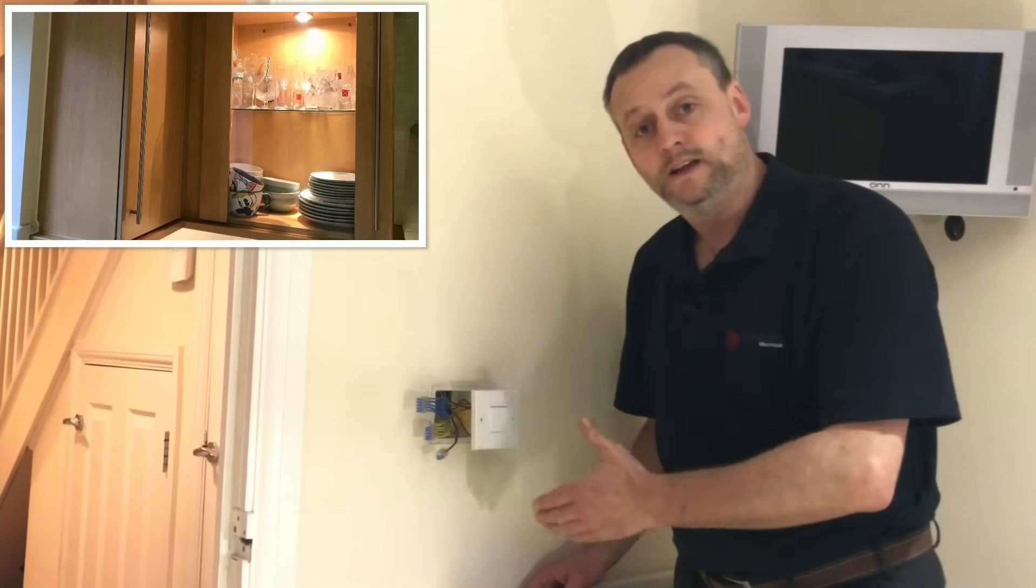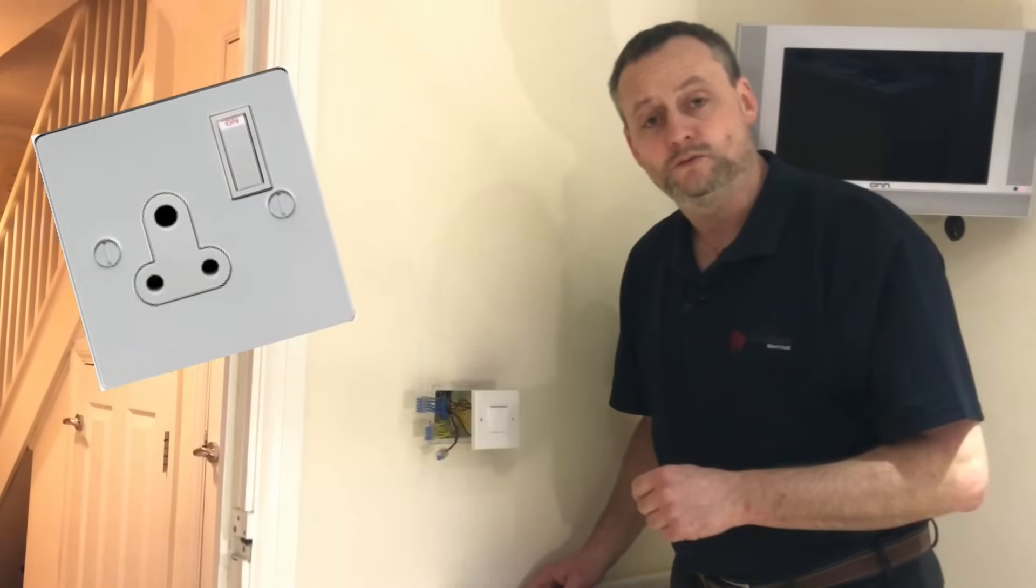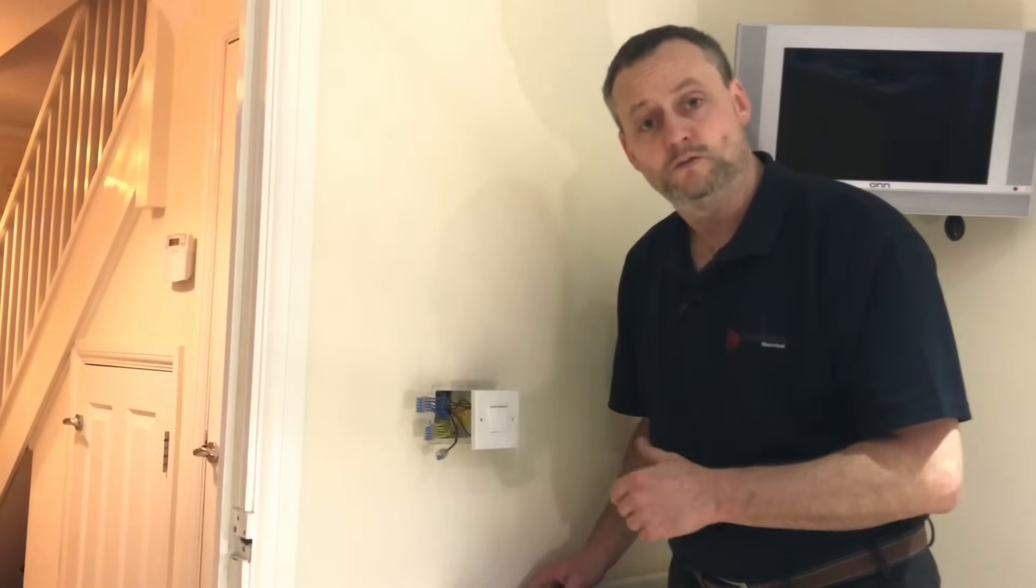The feed has been taken into here and also taken off to another switching point. Also, the feed has been taken to a 5 amp socket outlet to feed a TV, believe it or not. So we'll have a look at the connections that have been made within this two gang light switch, reiterating the points from our previous video presentation.